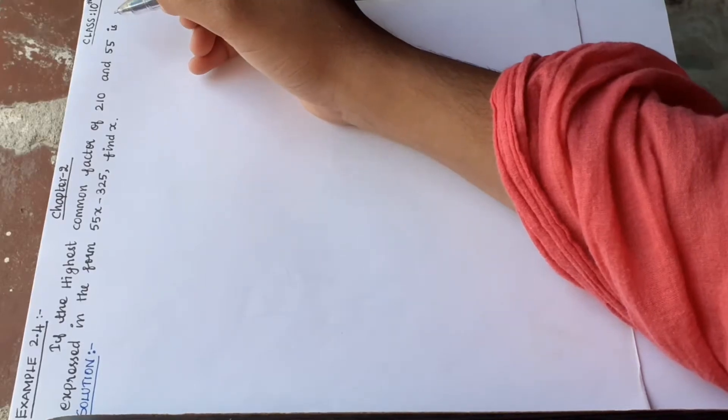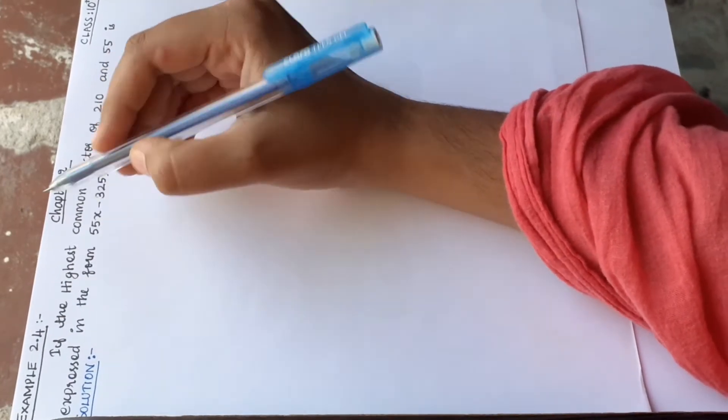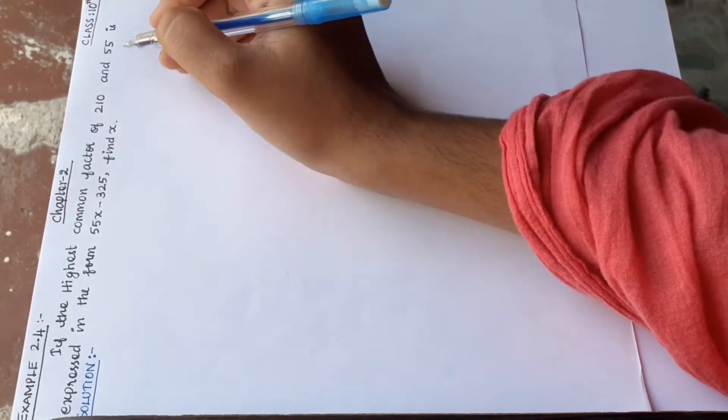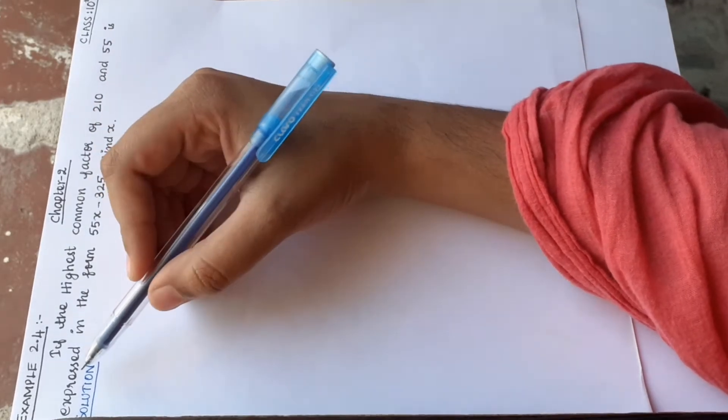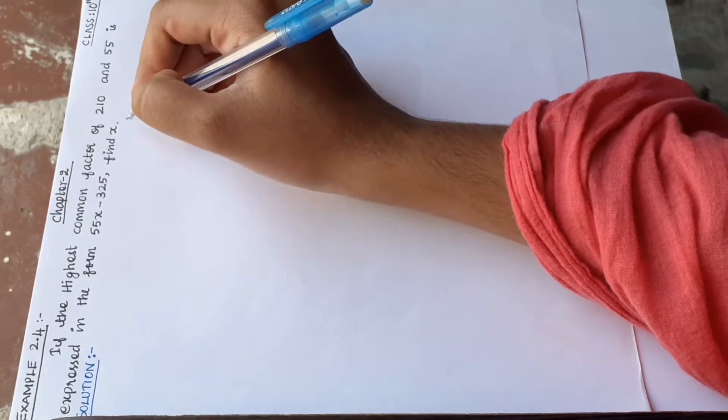Welcome to the Fastmax 10 Standard, Chapter 2, Example 2.4. If the highest common factor of 210 and 55 is expressed in the form 55x - 325, find x.